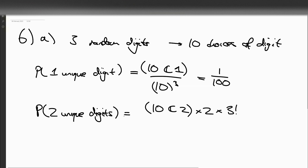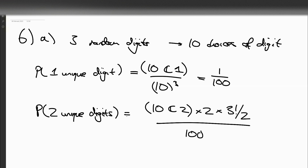But we need to divide by two, because the double digit can't be permuted with itself. And then divide that by a thousand, which is our total number of ways of getting things. So ten choose two times three factorial, divided by a thousand, and that gives us twenty-seven over a hundred.